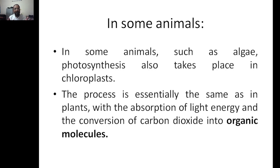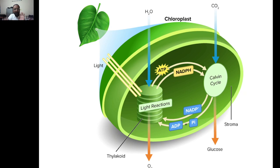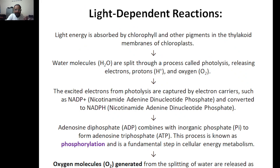In some organisms like algae, photosynthesis also takes place in chloroplasts, so the process is essentially the same as in plants — absorption of light converting carbon dioxide into organic molecules. In the light-dependent reaction, in the presence of light, water molecules are broken down into oxygen, and electrons produced are given to the Calvin cycle which converts carbon dioxide to glucose.